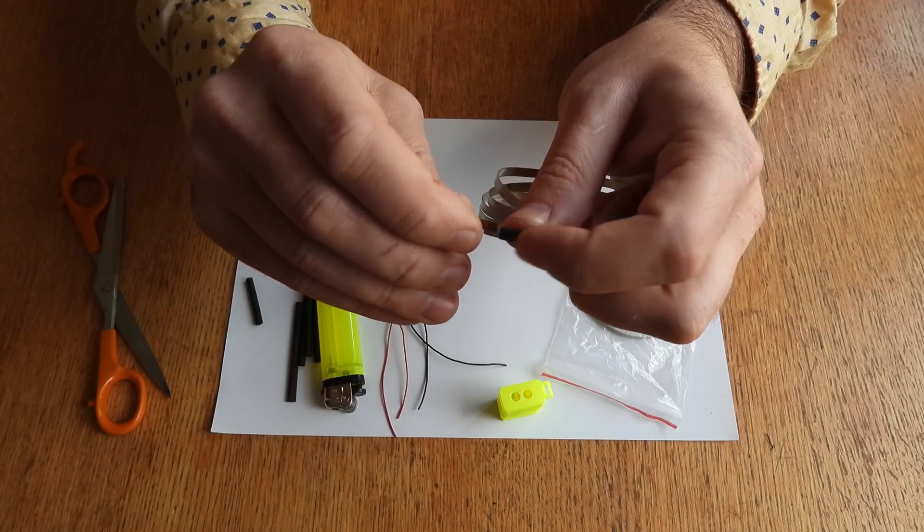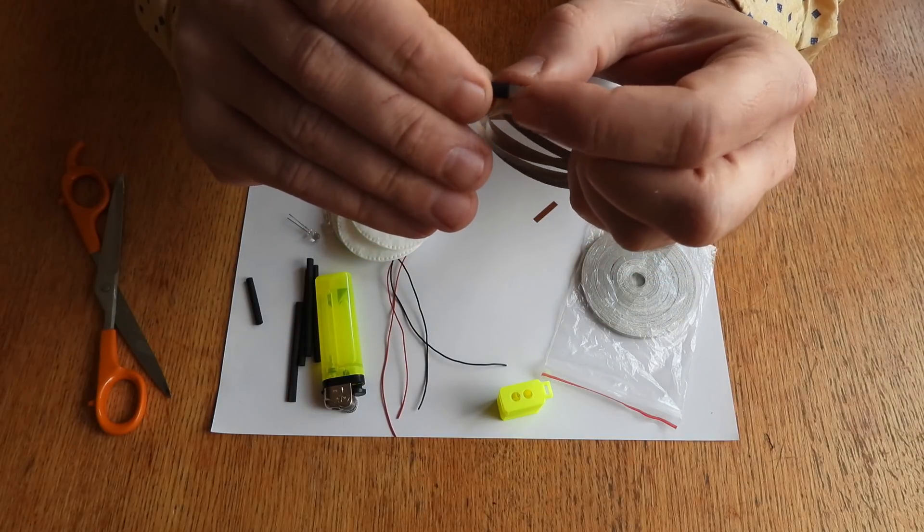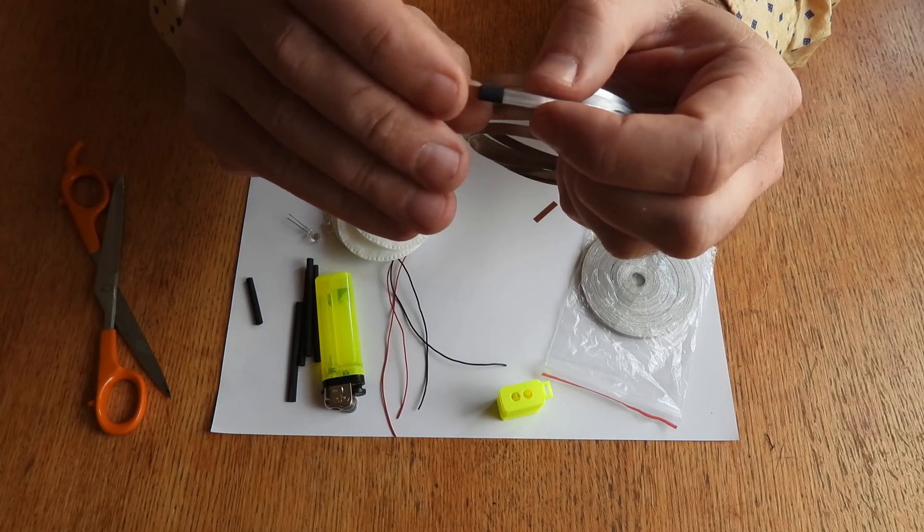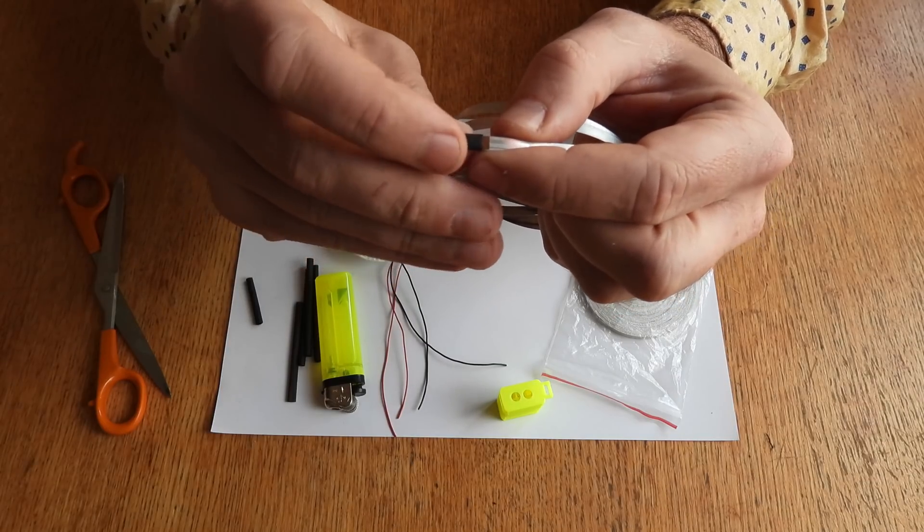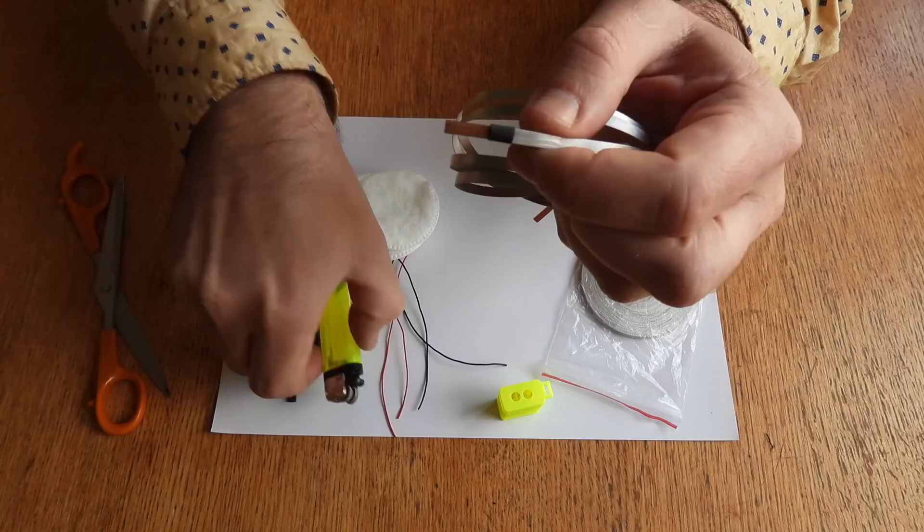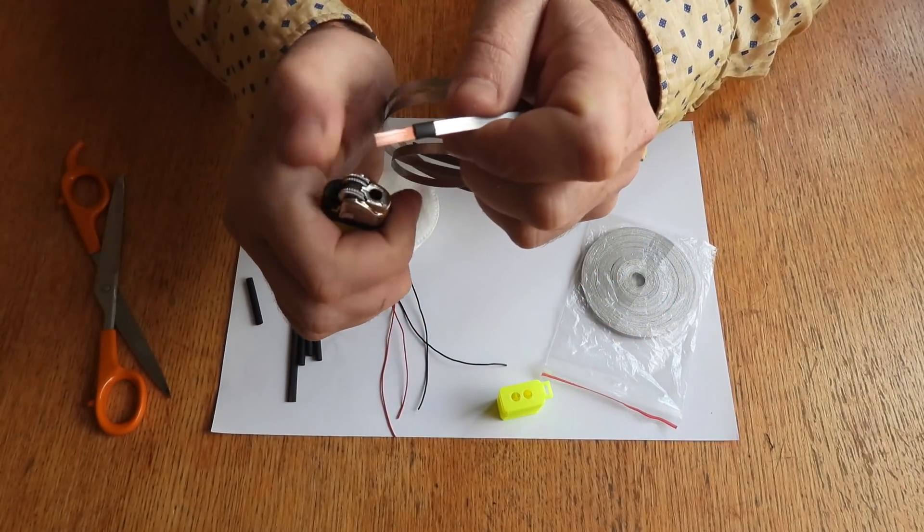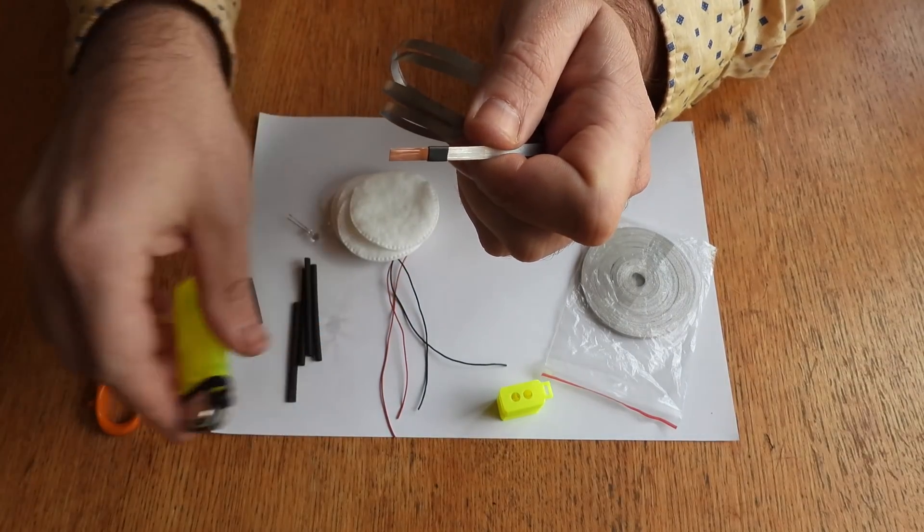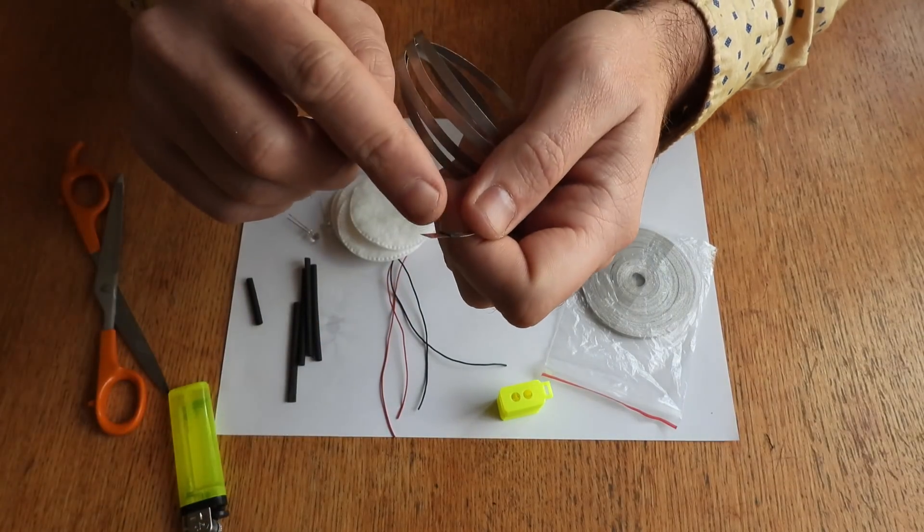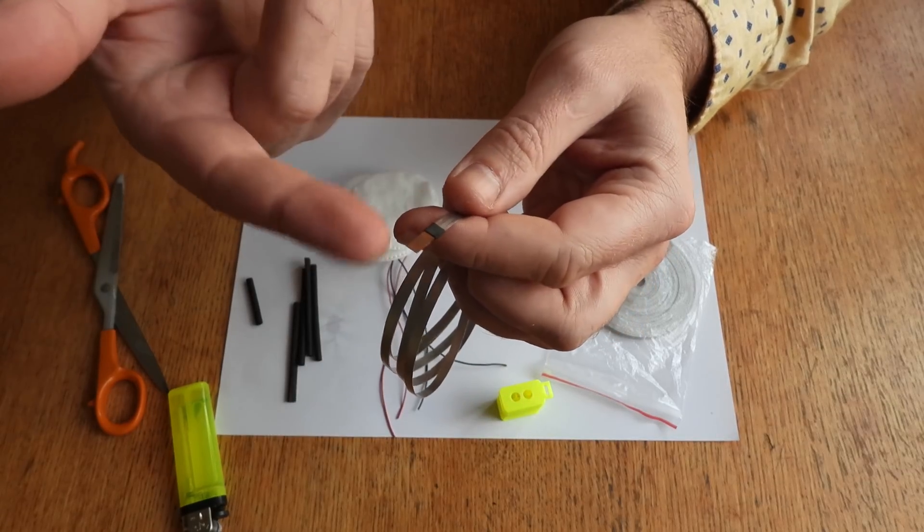After this I take lighter. That's it. Of course if you don't have shrinking tube you can use any kind of tape.